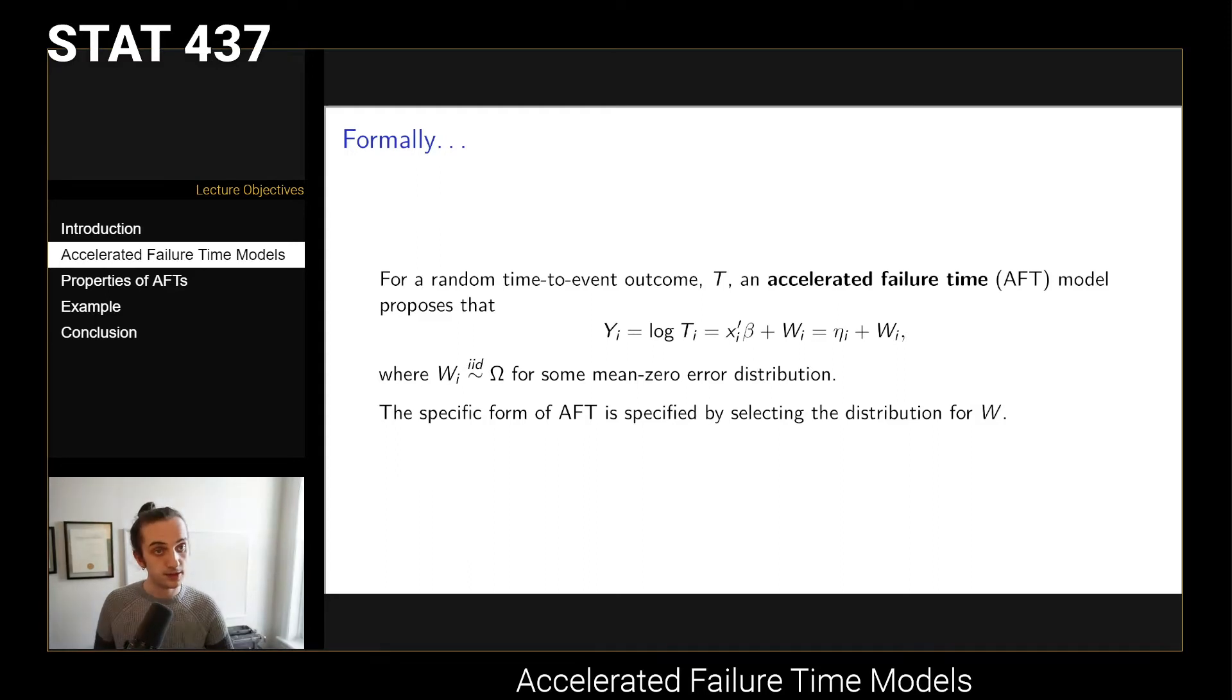Wi is going to be a mean zero error distribution. We've absorbed that scale parameter into Wi, so its variance isn't one, but it will have mean zero. The whole non-zero part of the mean is captured in this eta i term here.